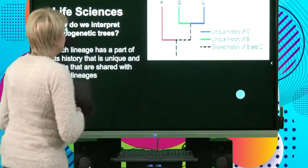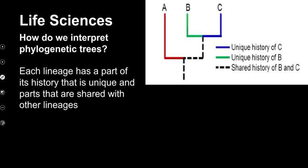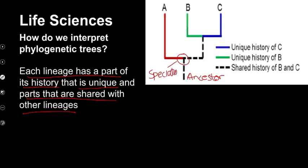Let's now have a look at what each lineage tells us. Each lineage has a part of its own history that is unique, and parts that are shared with other lineages. Here we can see the common ancestor, and they all share that common ancestor. Moving up, there's a speciation event — that's where speciation occurred — and we had the formation of species A and B.